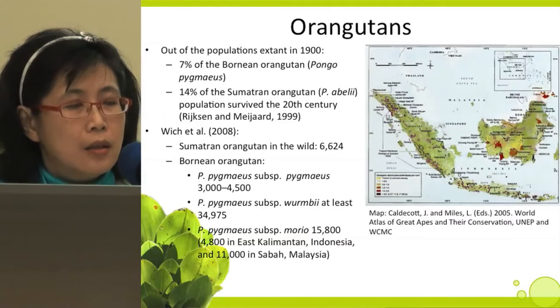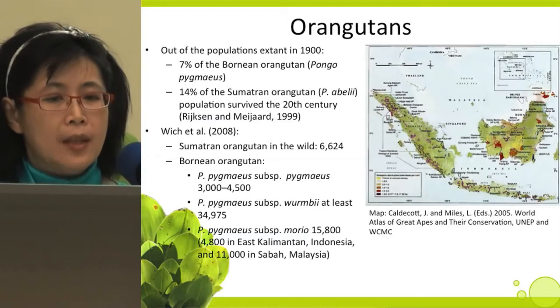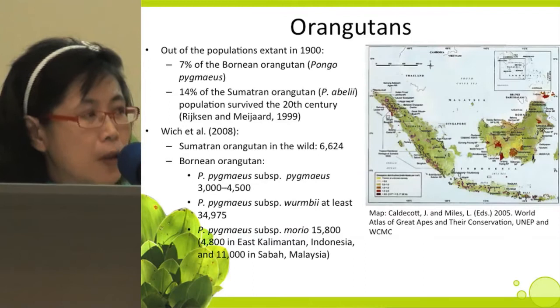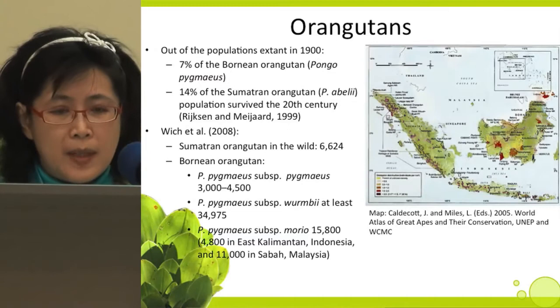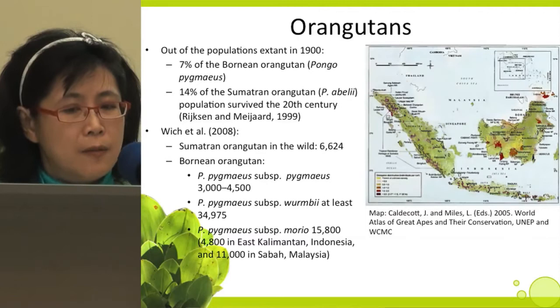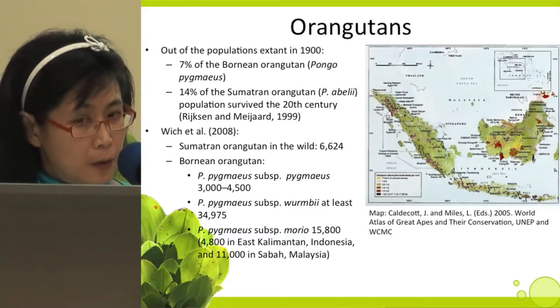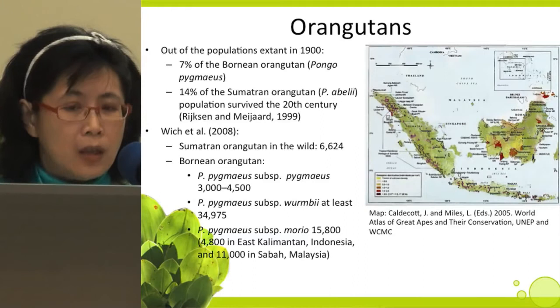For orangutans, out of the population extent in 1900, only 7% of the Bornean orangutan and 14% of the Sumatran orangutan survived the 20th century. According to the most recent estimates, Sumatran orangutan in the wild number only 6,624. The Bornean orangutan consists of three subspecies: Pongo pygmaeus pygmaeus between 3,000 and 4,500; the Pongo pygmaeus wurmbii subspecies around 15,800, spreading across Indonesian and Malaysian Borneo.